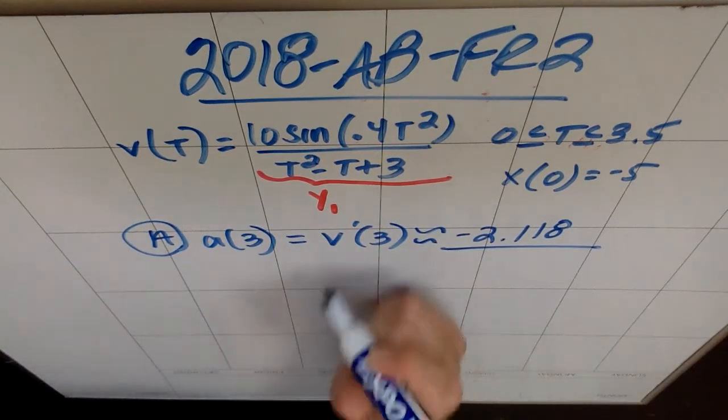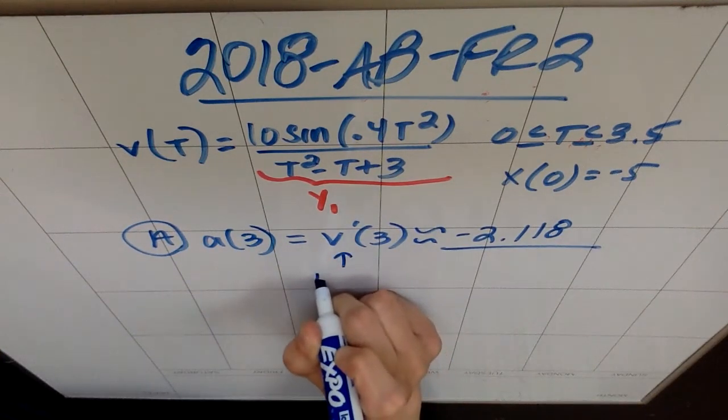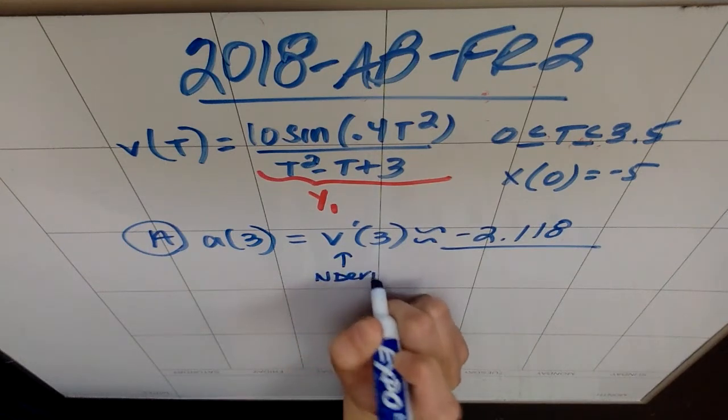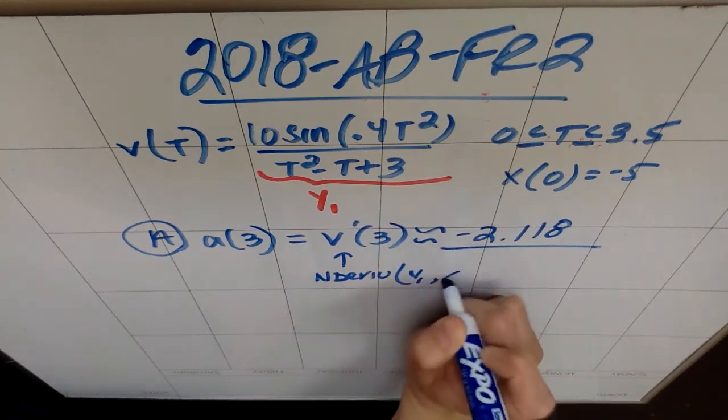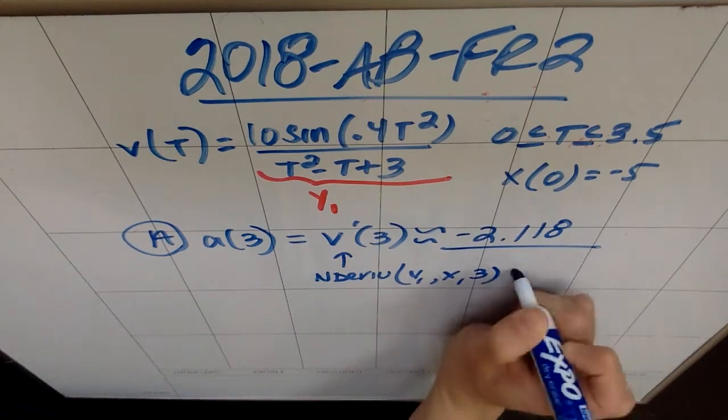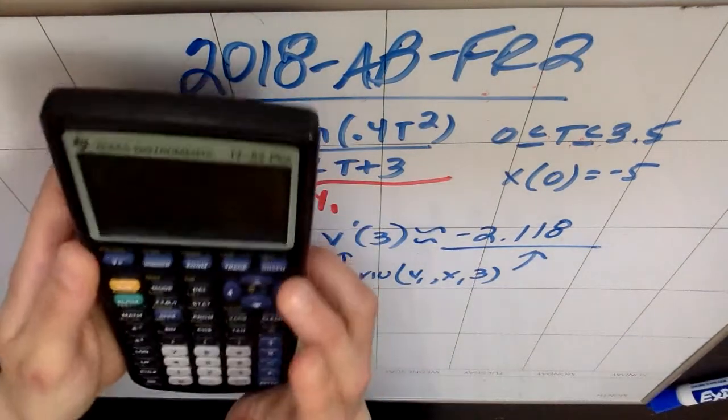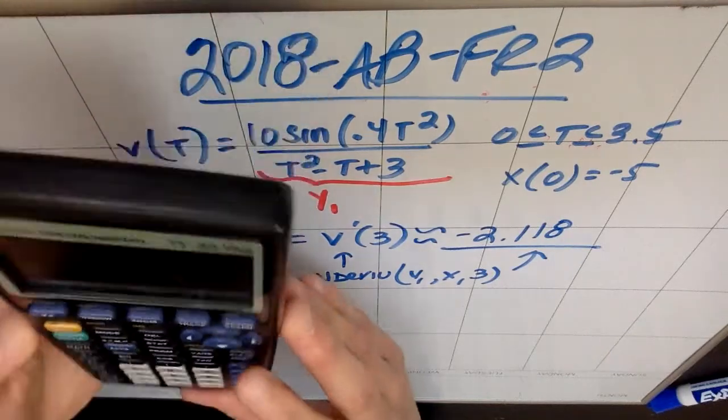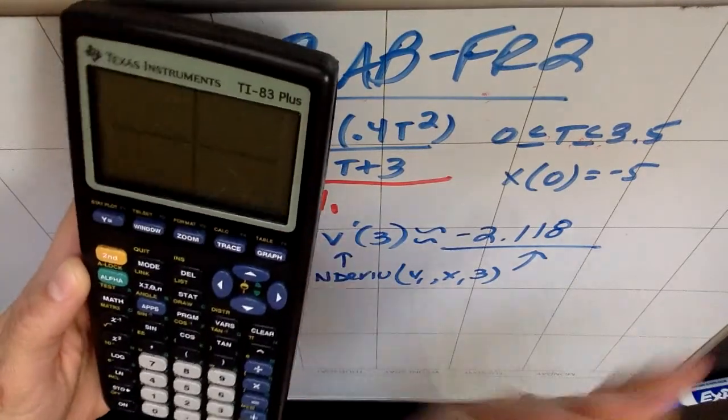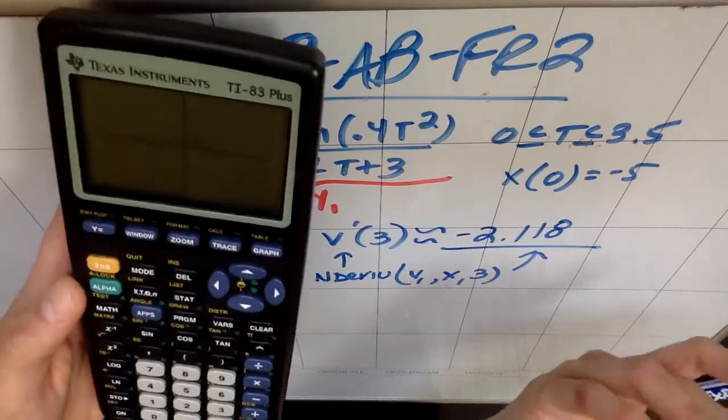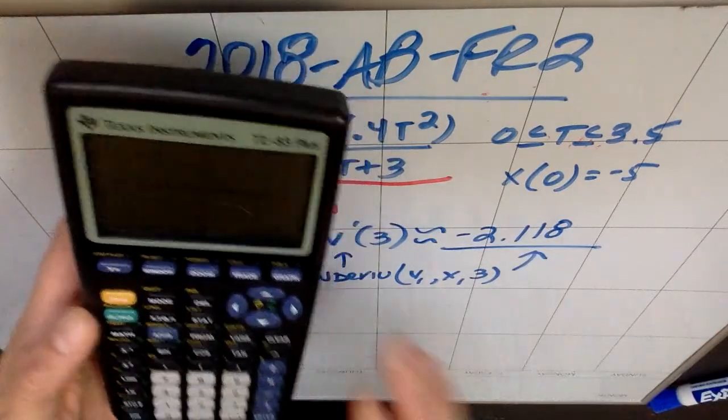When you're asked to derive, there are two logical ways to do this. You can either do math 8, which is fine, and you can go to n-derive y1 with respect to x at 3, and that's great and totally fine. That's one option. There's another cool way to do this.